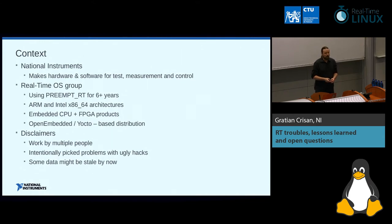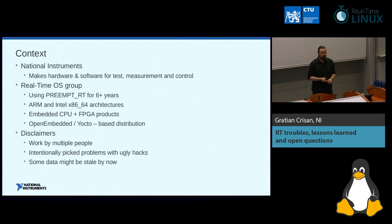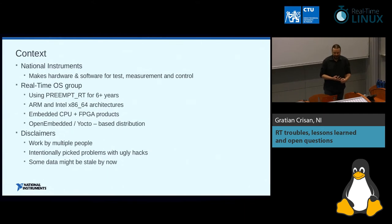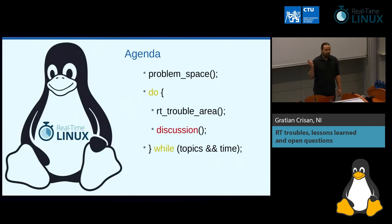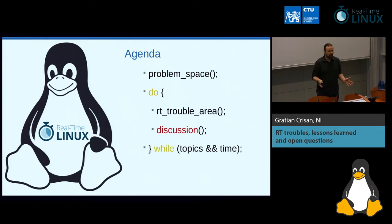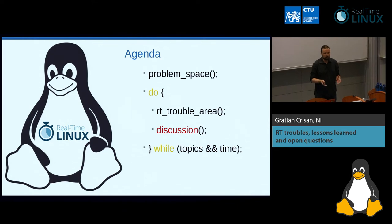I have a couple of disclaimers. This is work done by multiple people — I try to link to their mailing list posts or commits at the bottom of slides. I intentionally picked some RT trouble areas that have ugly hacks currently, so don't throw too many stones at me. Some data might be stale since the Linux kernel moves very fast. I tried to get numbers off the latest branch, which was two weeks ago. This is my agenda: one slide on the problem space, then describing RT trouble areas we've run into, with discussion.